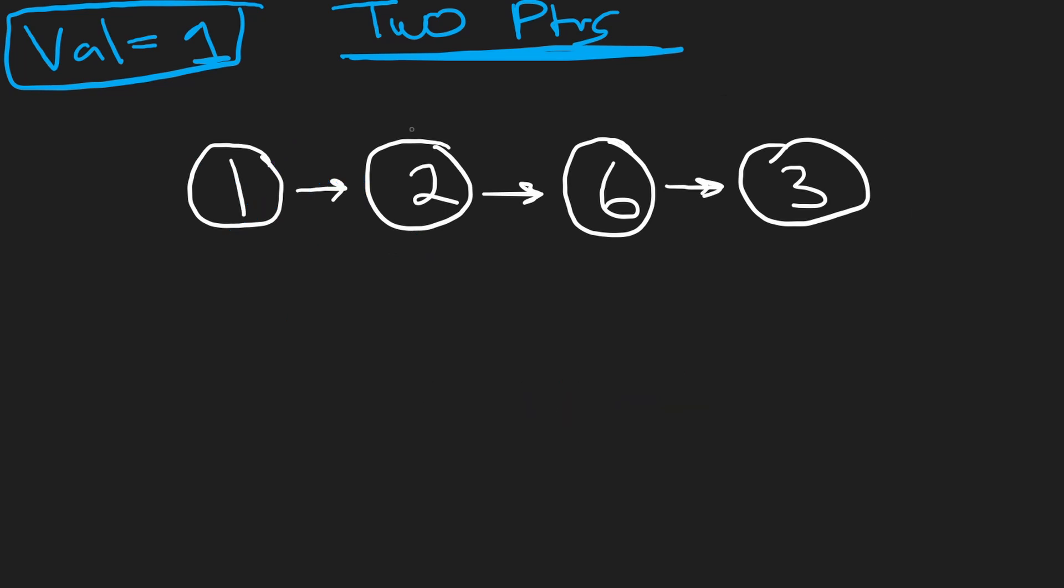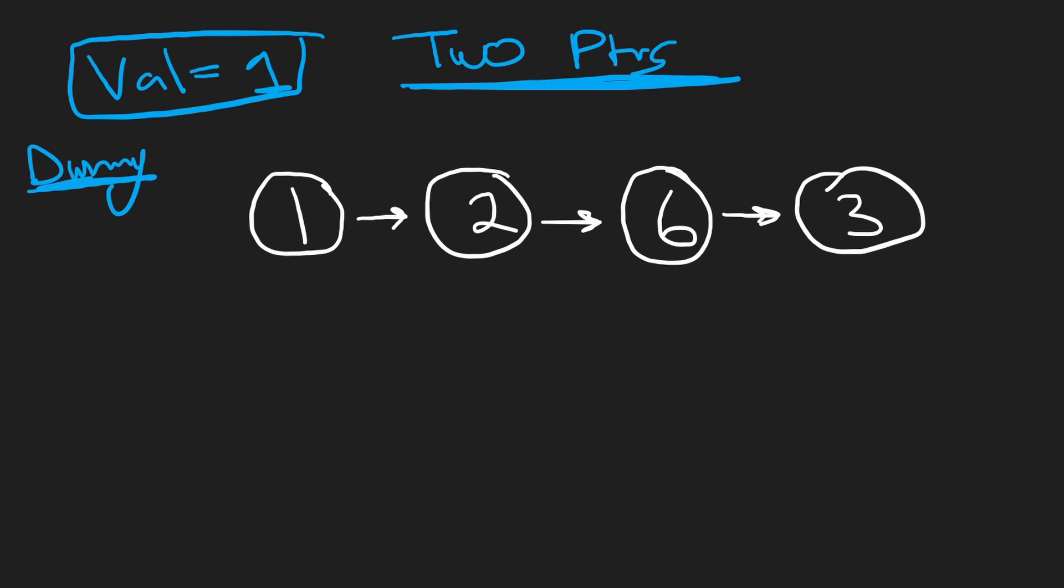So a neat little technique we can use for this is have a dummy node. So this is dummy, and the value doesn't really matter. I'm just going to put an x here because we don't really care what the value is. So we're creating an extra node that's a dummy node. This is basically just for when we write our code, we don't have to deal with too many edge cases. So now let's just see what the actual algorithm looks like.